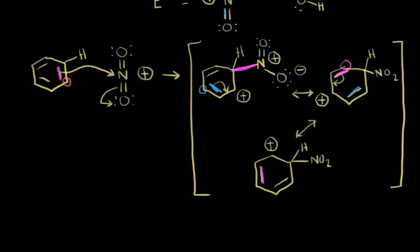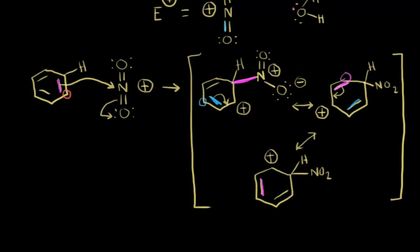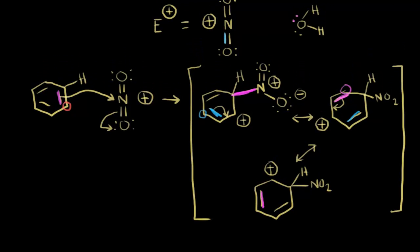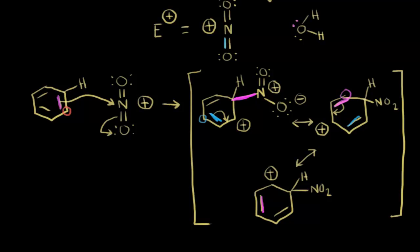We're now ready for our last step: deprotonation of our sigma complex. Going back up, what could function as a base? The water molecule here could function as a base — a lone pair of electrons on the water molecule takes the proton, which causes these electrons to move in to reform the aromatic ring.